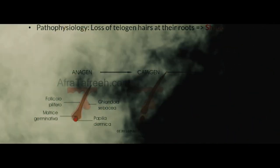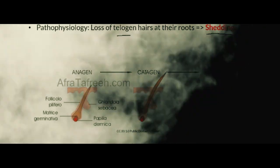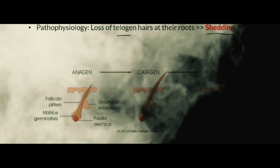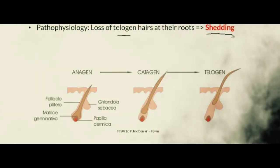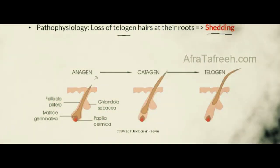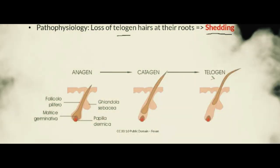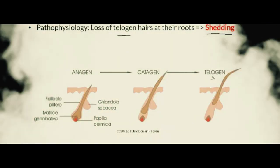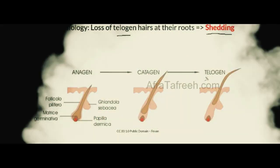The pathophysiology of telogen effluvium is loss of telogen hairs at their roots, resulting in shedding. In the hair cycle, there are three key phases: the anagen phase, which is essentially a growth phase; the catagen phase, which is a transitional phase; and the telogen phase, which is the rest phase. Importantly, if a patient is exposed to a significant stressor such as pregnancy, they can lose up to 70% of their hairs currently in the resting or telogen phase.